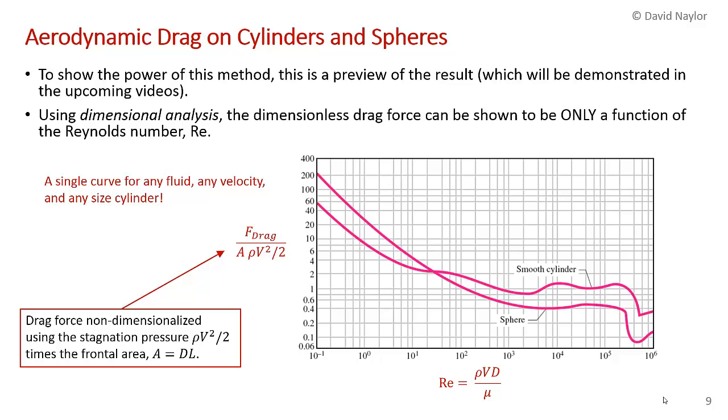To end, I thought I'd show you a practical example of dimensional analysis. We're considering that same problem—aerodynamic drag on cylinders and spheres—and to show the power of dimensional analysis, what I'm showing here is a preview of a result which we're going to demonstrate in an upcoming video. Using dimensional analysis, you can show that the dimensionless drag force per unit length of the cylinder can be shown to be only a function of the Reynolds number. We have the drag force F_drag divided by ρV²/2—the stagnation pressure at the front stagnation point of the cylinder—times the area, which gives the pressure force on the cylinder.